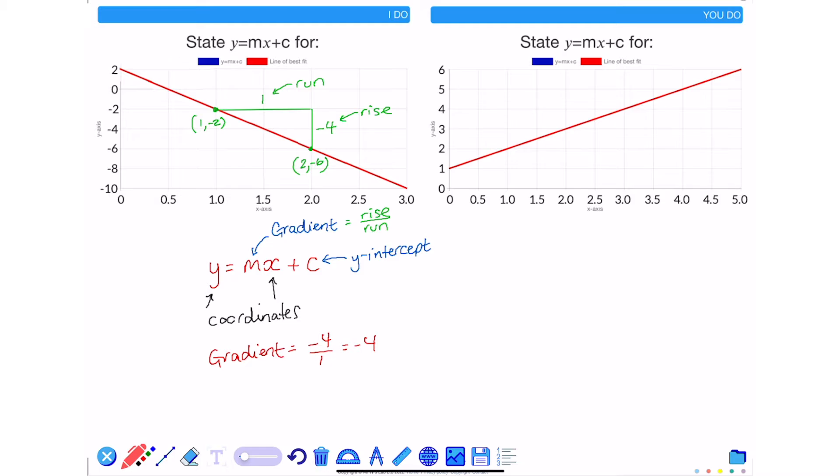The y-intercept is the point where the red line crosses the y-axis. The coordinate of the point where it crosses the y-axis is 0, 2. This means my y-intercept value is 2.